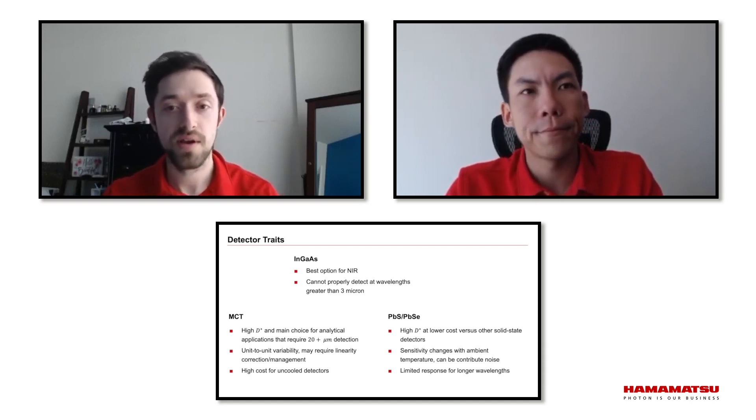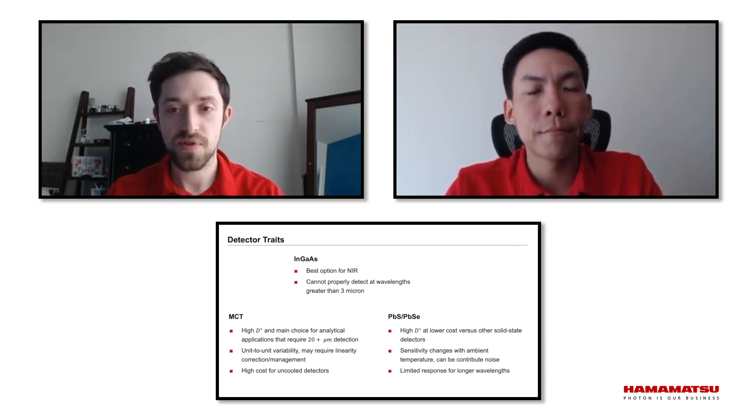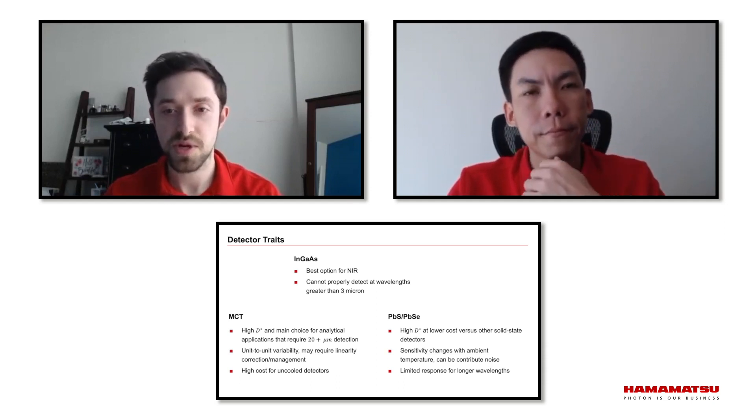Mercury cadmium telluride, a very popular choice in FTIR applications since it can reach very long wavelengths and it's highly sensitive. However, the nature of the material with its spatial sensitivities and fluctuating D-star unit-to-unit dynamic range can be limited.